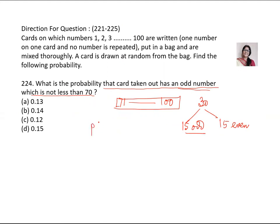So there are 15 odd numbers above 70. So what is the probability? Odd more than 70 is equal to 15 upon 100. What is the result? 0.15. So D is the answer.